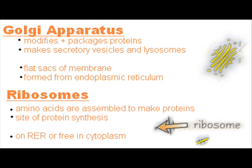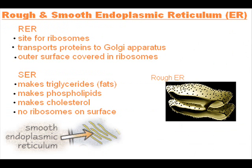A ribosome is a very small organelle that either floats free in the cytoplasm or is attached to the rough endoplasmic reticulum. The rough endoplasmic reticulum is a system of membranes enclosing a fluid-filled space, and its surface is covered with ribosomes. The smooth endoplasmic reticulum is similar to the rough ER but with no ribosomes. It synthesizes and processes lipids.